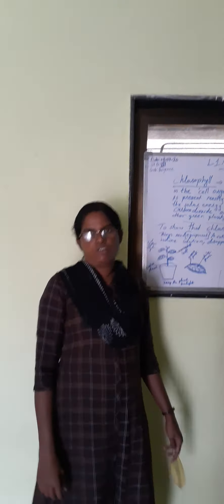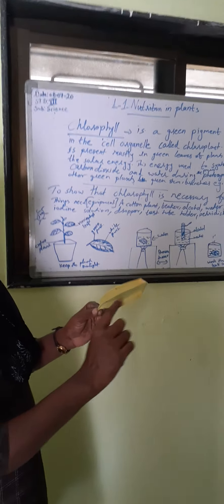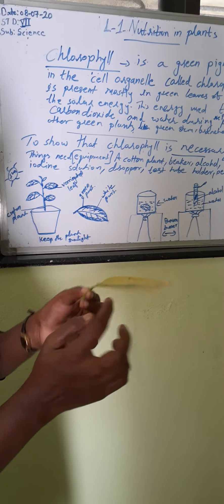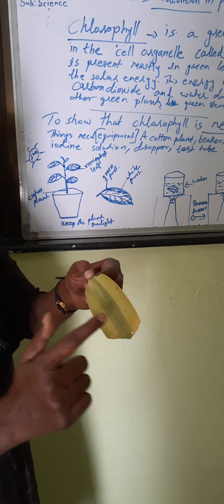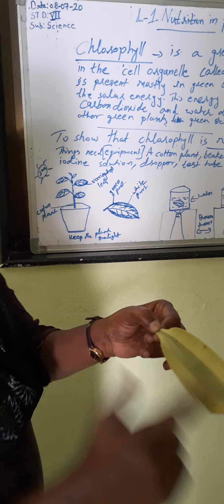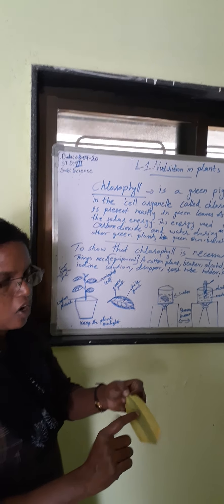Good morning students. Yesterday we learned to show that carbon dioxide is necessary for photosynthesis. Today we will learn to show that chlorophyll is necessary for photosynthesis.